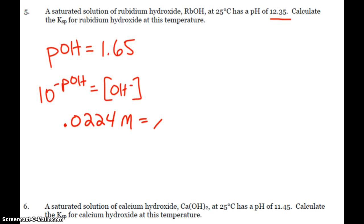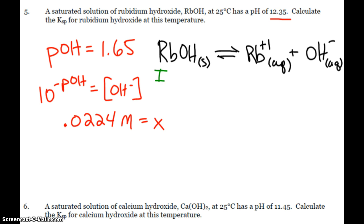And that is going to be X in my reaction because I have rubidium hydroxide breaking apart into the rubidium ion and hydroxide ion. So there's my hydroxide. And for my ICE table, initially we don't have to worry about the rubidium hydroxide solid. Rubidium and hydroxide start at 0, plus X, plus X. So I can see that my 0.0224 is going to be my X.